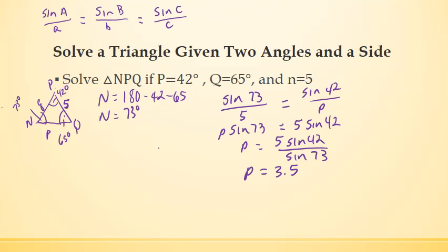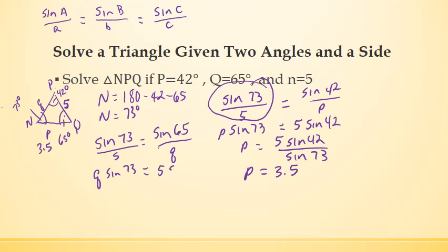Alright, now let's find the side of Q. Now what I want to stick with is this right here because that's the one I was given the most information, angle N and side n. So I'm going to set it up like this. We're trying to find Q. We found P, it's 3.5. So we got the sine of 73 over 5 equals the sine of Q which is 65 degrees over Q. Q times the sine of 73, 5 times the sine of 65. And so Q is going to equal 5 times the sine of 65 over the sine of 73.